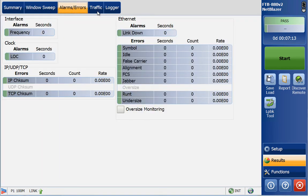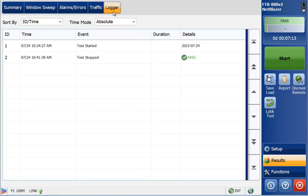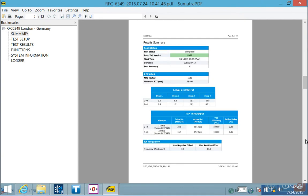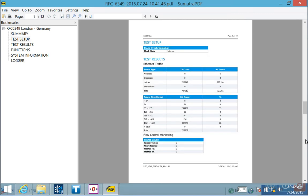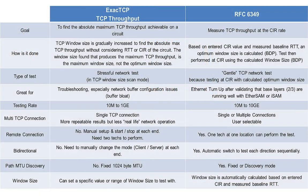The TCP efficiency percentage represents the percentage of bytes that were not retransmitted. The buffer delay percentage represents the increase in round-trip time during the TCP throughput test versus the inherent baseline RTT. The minimum TCP throughput for a pass verdict based on the entered threshold is also shown. The window sweep tab provides a visual representation of the four different TCP throughput tests at different window sizes. The other tabs — alarms and errors, traffic, and logger — are the standard tabs found in all our Ethernet test applications.